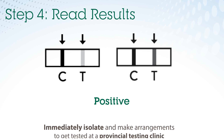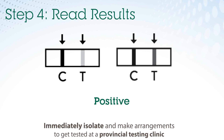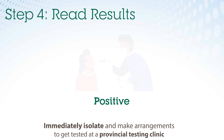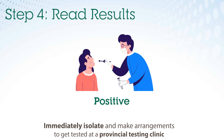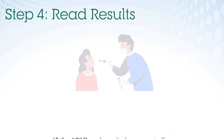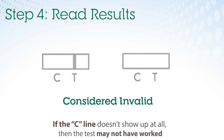Immediately isolate and make arrangements to get tested at a provincial testing clinic. When you arrive at the testing clinic, tell the staff that you tested positive using a rapid test. If the C line doesn't show up at all, then your test may not have worked. Repeat with a new test.